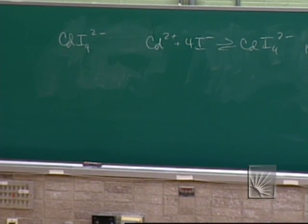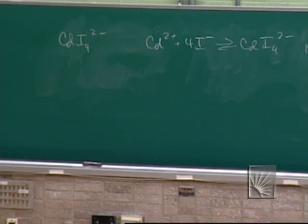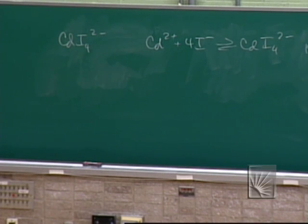When we first introduced equilibrium constants, the point was just to share that the subscript on K lends clarity as to what kind of equilibrium constant it is. We've talked about Ka's and Kb's. If H3O+ is a product, you have a Ka. If OH− is a product, you have a Kb. KSP is the solubility product — talking about a solid compound and its ability to break apart into ions.